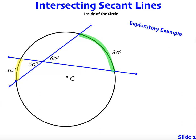So since we reviewed central angles and inscribed angles, let's get into the new material, which is on secants. If you recall from the vocabulary last week, a secant or a secant line is a line that goes through a circle intersecting the circle at two distinct points. A chord, which you just saw, is a part of a secant line. A secant line goes forever in either direction.